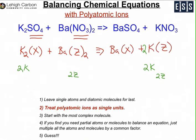Next, look at barium: there's one barium on the left, and one barium on the right, so they're balanced. All that's left now is the sulfate represented by X — there's one X on the right side, and one X on the left, so we're balanced. So without having to break up the polyatomic ions, we were able to balance this equation. Looking at the full equation, by just adding a two in front of potassium nitrate, we now have a balanced equation.